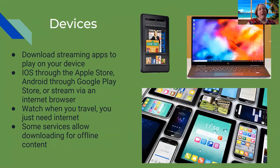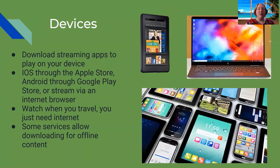You can download streaming apps onto your Kindle, laptop, tablet, or phone — through the Apple App Store for iOS or Google Play Store for Android — and stream through your internet browser. It's very travel-friendly. Some streaming services also allow you to download content for offline viewing: you connect to the internet, download the content, and it's saved on your device for a set time. So if you're on a train with no internet, you can still watch a movie you downloaded.